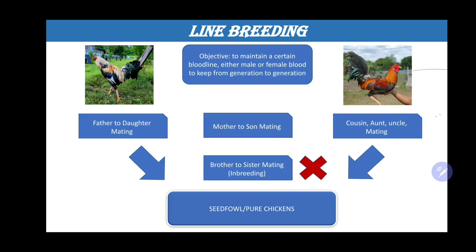The main objective of line breeding is to maintain a certain line. After a series of different breeding methods over time from generation to generation, when you do this kind of breeding, you will produce your own seed fowl — pure chickens because of this kind of line breeding.